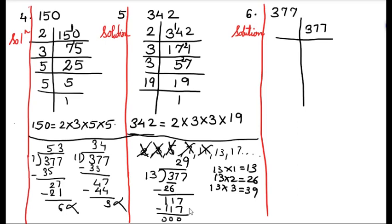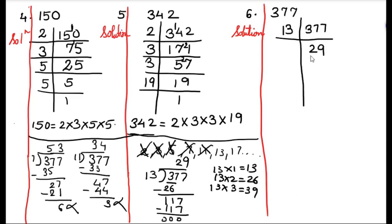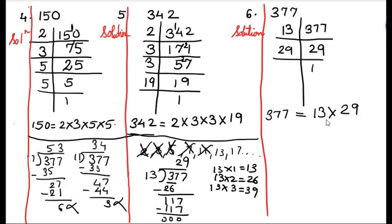When the remainder is 0, we can say that this number is divisible by 13. So 13 times 29 equals 377. Now is 29 a prime number? Yes — 29 ones are 29. So these two are the prime factors of 377. We can write: 377 equals 13 multiplied by 29. It has only 2 prime factors. You can verify by doing 13 into 29 in rough and you will surely get 377.